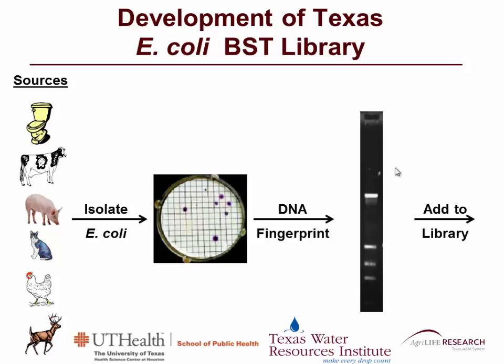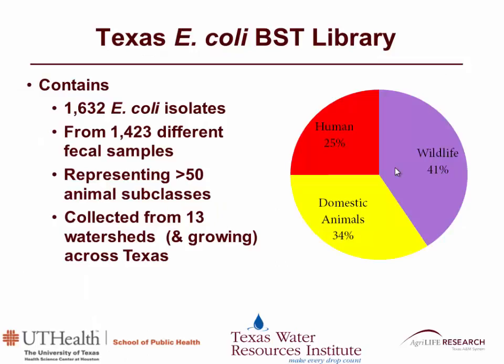To develop our BST library, the first thing we had to do is collect fecal samples from all the various sources — fresh fecal samples. From that, we isolate the E. coli, and then from the isolated E. coli, we develop the DNA fingerprint that's added to our library. To date, our BST library contains about 1,600 E. coli isolates from about 1,400 different fecal samples, representing more than 50 animal subclasses.